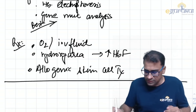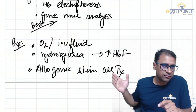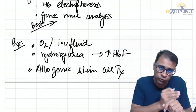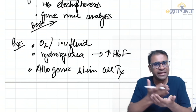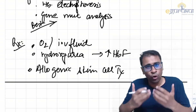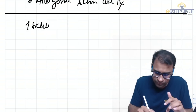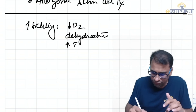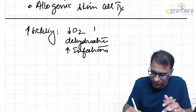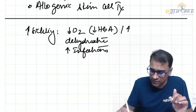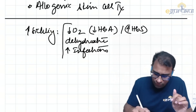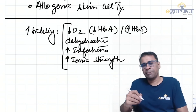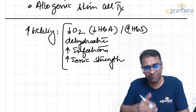Factors that increase sickling include: decreased oxygen, dehydration, and increased infections. Increased sickling is associated with decreased HbA and increased HbS. Increased ionic strength also plays a role, though it is more significant in lab studies. The reverse conditions decrease sickling.